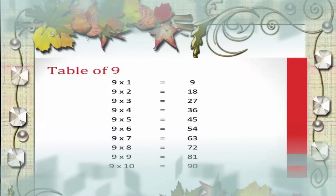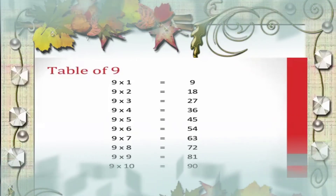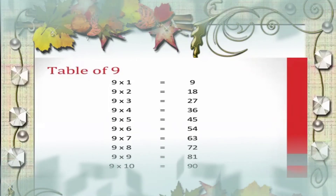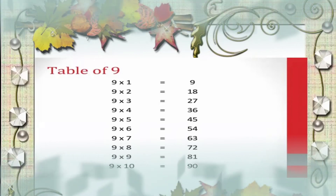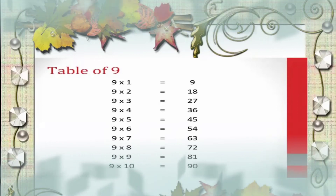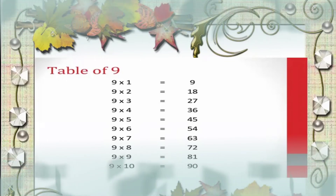Now the table of 9. 9 1s are 9, 9 2s are 18, 9 3s are 27, 9 4s are 36, 9 5s are 45, 9 6s are 54, 9 7s are 63, 9 8s are 72, 9 9s are 81, 9 10s are 90.